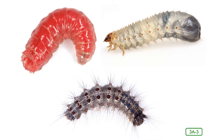Fly larvae are called maggots. Beetle larvae are called grubs. And the larvae of butterflies and moths, as you just heard, are called caterpillars. Larvae feed and grow as quickly as they can.